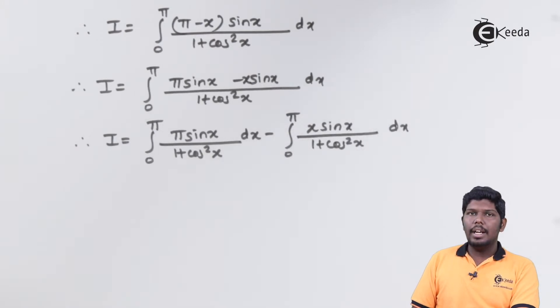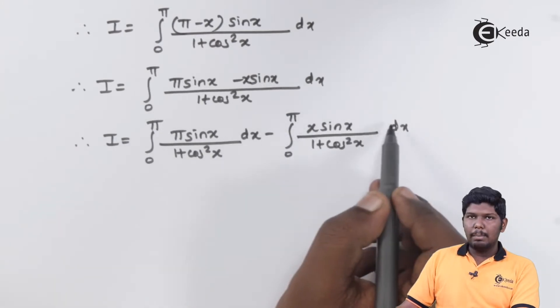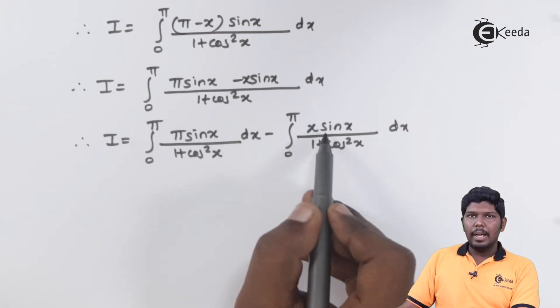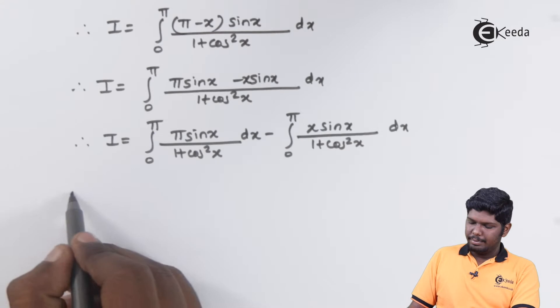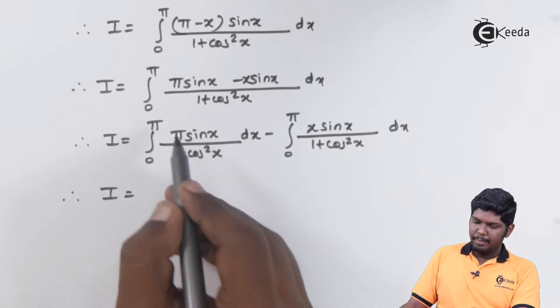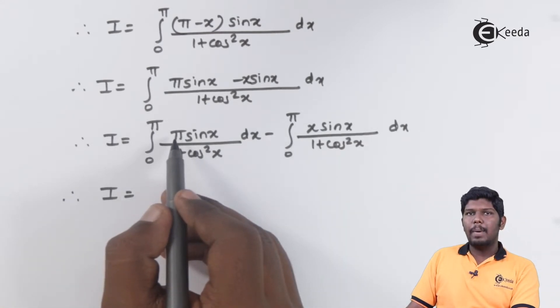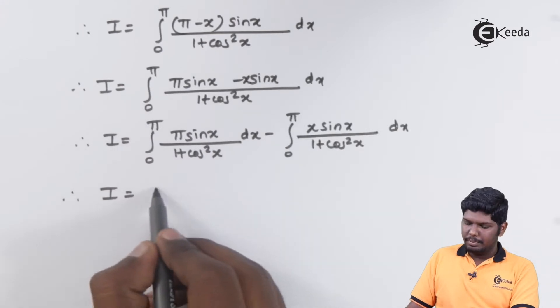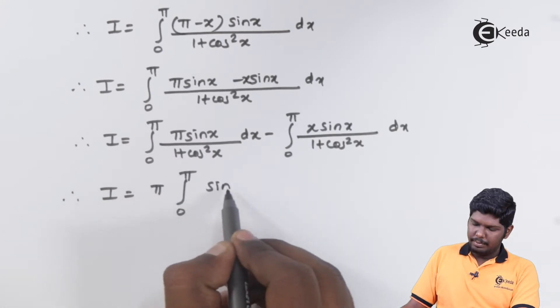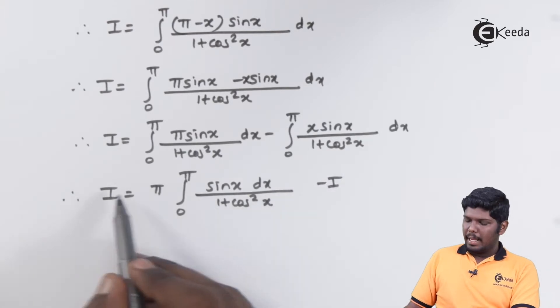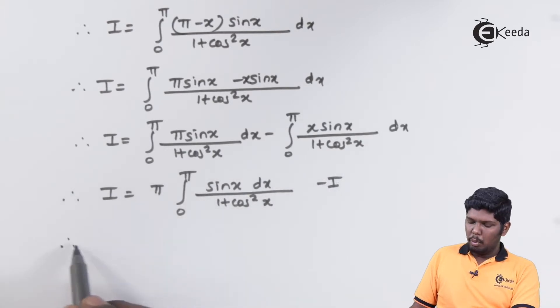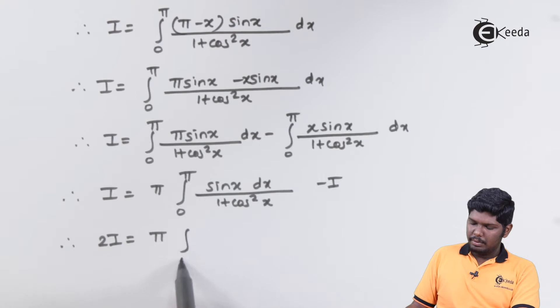This integral is the original integral i. So we can replace this by i and taking this minus i on the left hand side, we will get i plus i as 2i. Also, we can take this pi constant outside the integral.